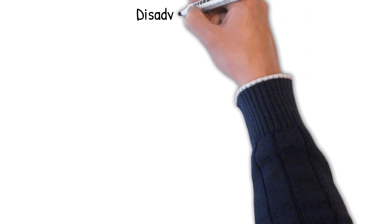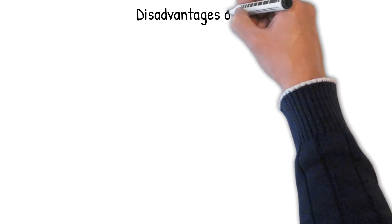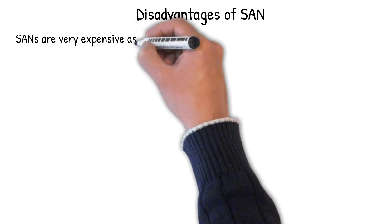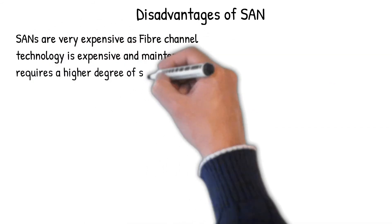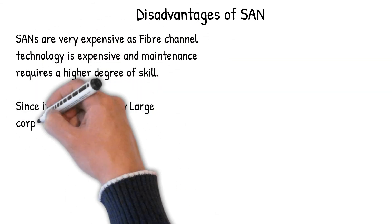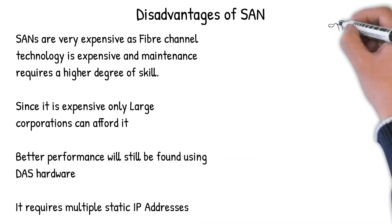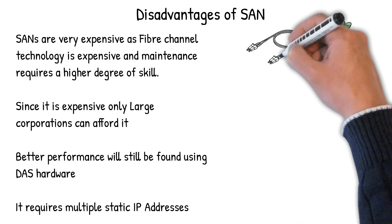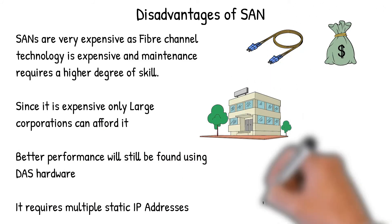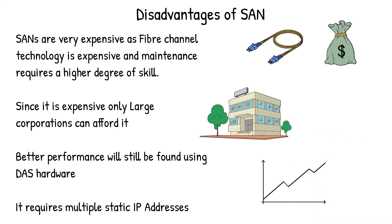Disadvantages of SAN: SANs are very expensive as fiber channel technology is expensive and maintenance requires a higher degree of skill. Since it is expensive, only large corporations can afford it. Better performance will still be found using DAS hardware. It also requires multiple static IP addresses.